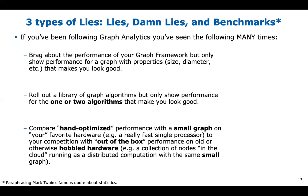The one that really burns me up is when you take your hand-optimized library, do everything to get performance up, run it on a small graph that fits in memory on your favorite fast single processor, and compare it to your competition with out-of-the-box performance on old or hobbled hardware. A particularly egregious example is comparing a single processor with an in-memory graph to a distributed cloud cluster running over the same small graph, just to make themselves look good.